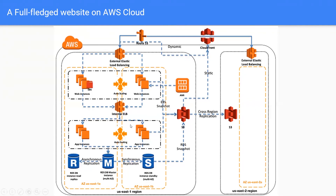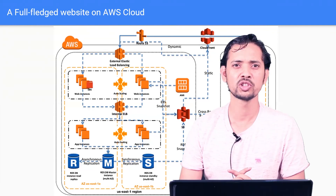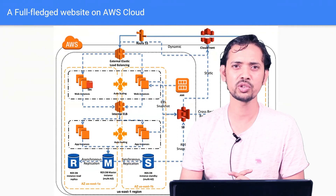This is just a very high-level view of your web application — there are many other services that can be used. But this picture sets the tone for the next few videos and helps identify exactly what service you are using to serve what purpose. Keep this three-tier web architecture in mind when we go on to learn about load balancers, auto scaling, databases, and so on. We will keep referring to this architecture going forward. See you soon in the next video. Thank you for watching.